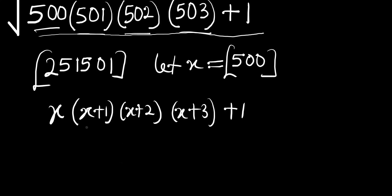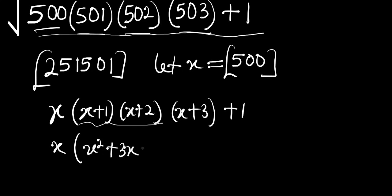Looking at what we have, we can multiply out the first two brackets. x times (x+1) gives us x squared plus x, and (x+2) times (x+3) gives us x squared plus 3x plus 2. We still have the plus 1 outside.